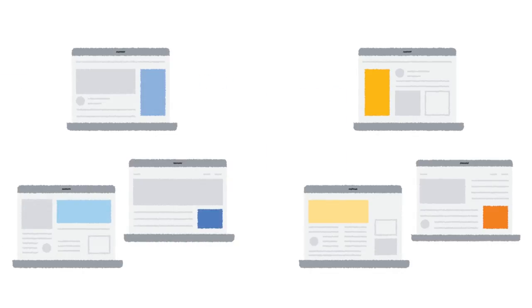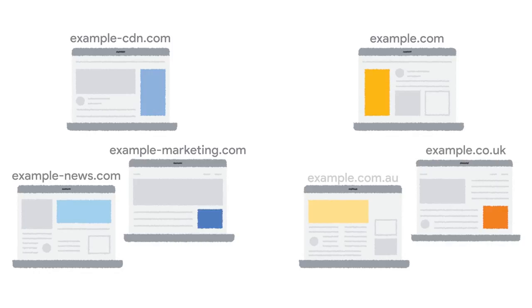First-party sets allow related domain names owned and operated by the same entity to declare themselves as belonging to the same first party. First-party sets is part of the Privacy Sandbox, which is a series of proposals to satisfy cross-site use cases without third-party cookies or other tracking mechanisms. So why do we need first-party sets?